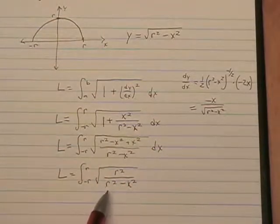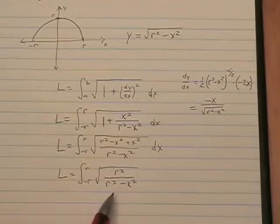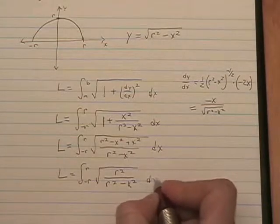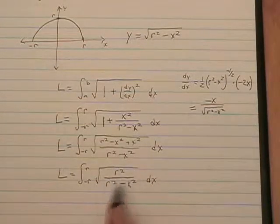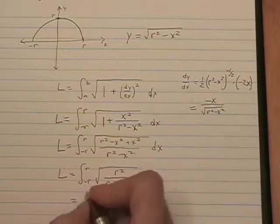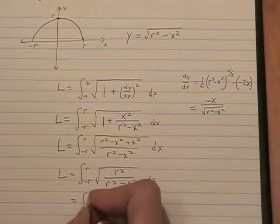The square root of this bottom is not r minus x, OK? However, the square root on the top is r. So that does make things a little easier.